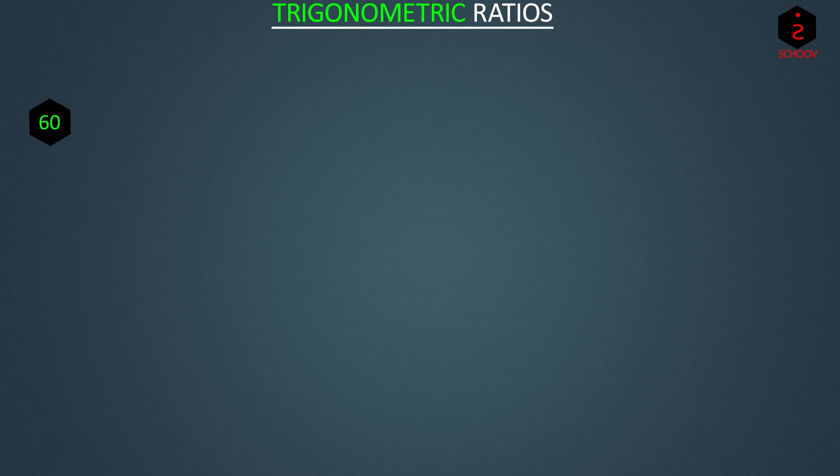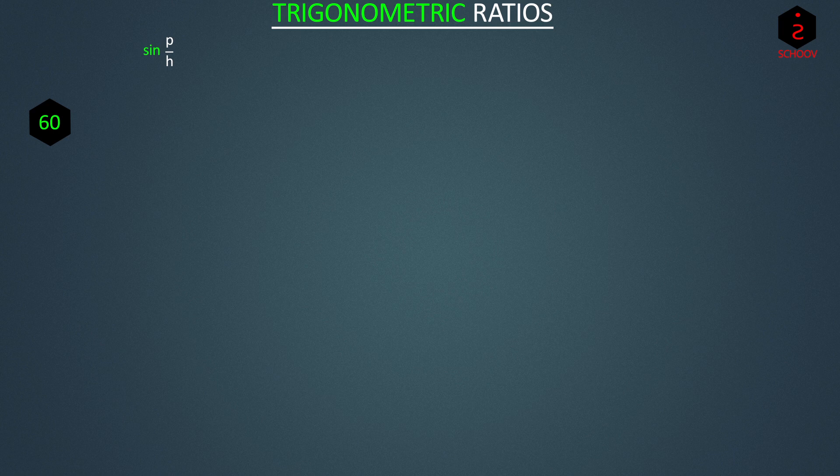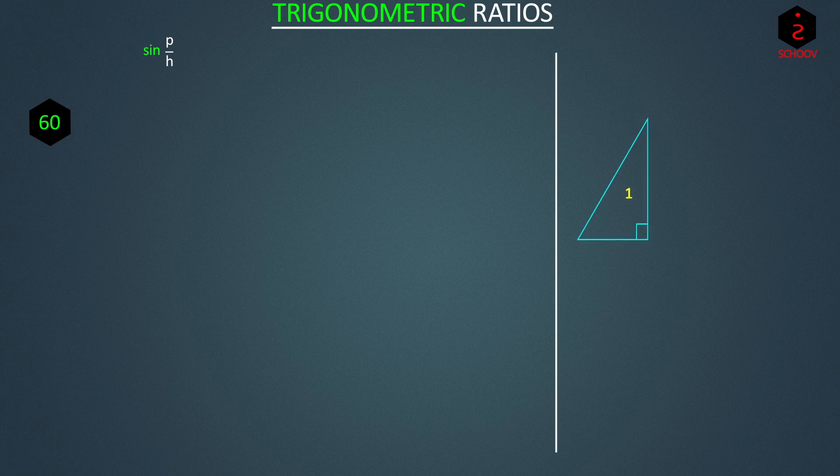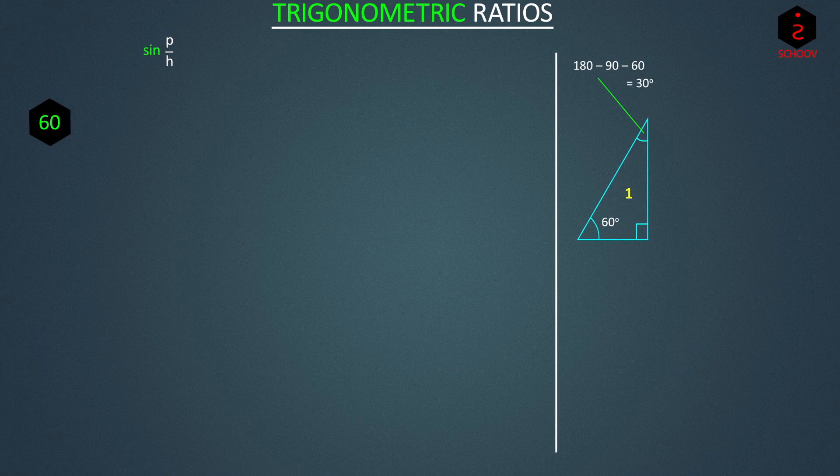How do we find the value of sin 60? Sine is perpendicular upon hypotenuse. So if we know this ratio, we know the value of sin 60. So bring back our favorite right angle triangle one with theta as 60 degrees. So this angle is 180 minus 90 minus 60, that is 30. Now if we draw an identical triangle 2 like this, we get this big triangle ABC which is equilateral.